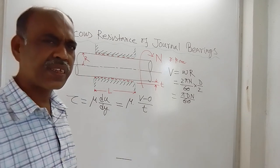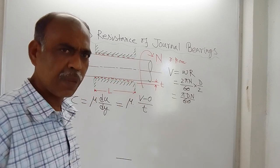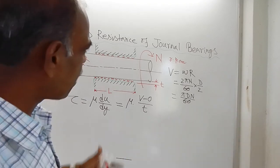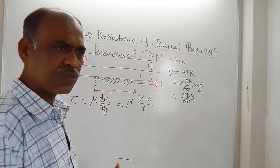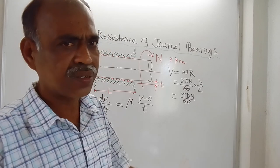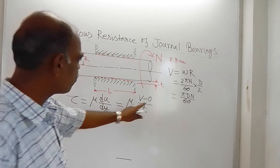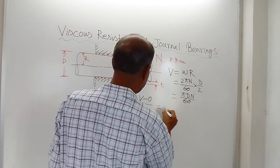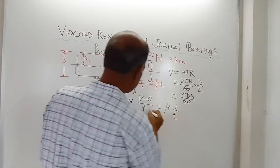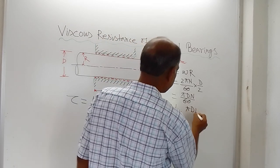Rigorous mathematical analysis is available if you want to design a bearing. But just to get an idea about the calculation, you can watch this one, and of course this is in your syllabus so you have to take preparation of this. So, shear stress tau = mu × V/T = mu × (πDN/60) / T, giving tau = μπDN / (60T).